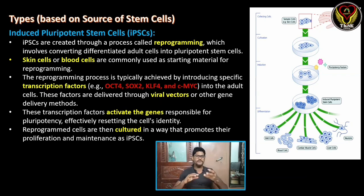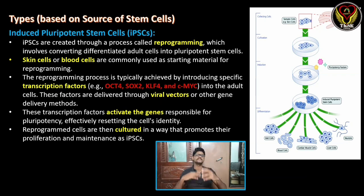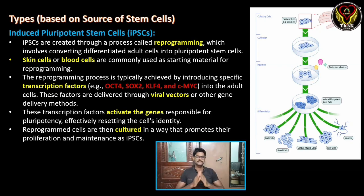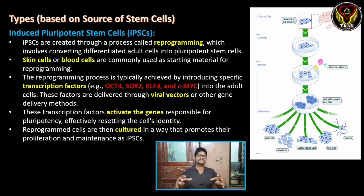Then, we will reverse the cells back into pluripotent stem cells — these are called induced pluripotent stem cells. From these pluripotent cells, we can then differentiate them into different kinds of specific cells as needed.